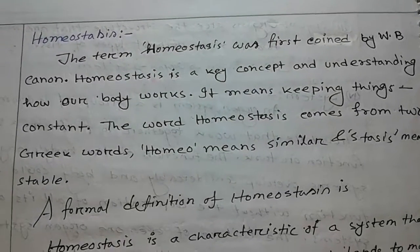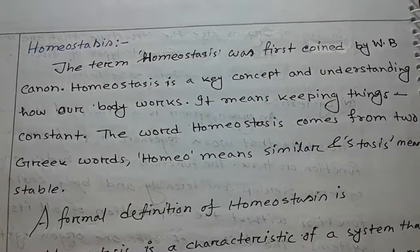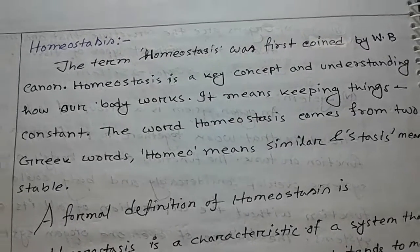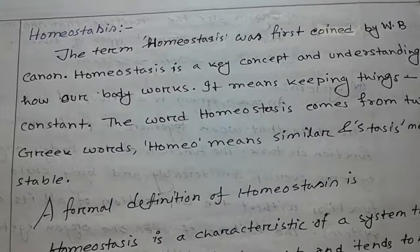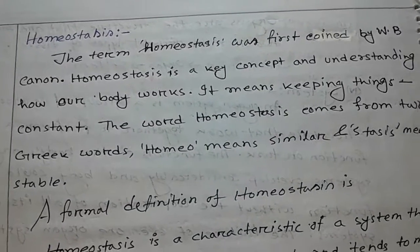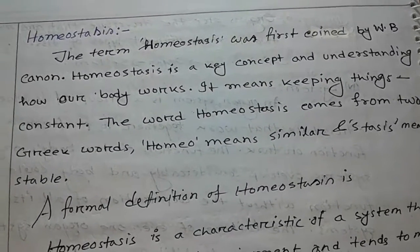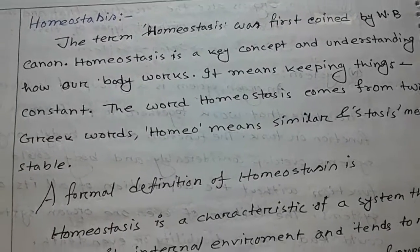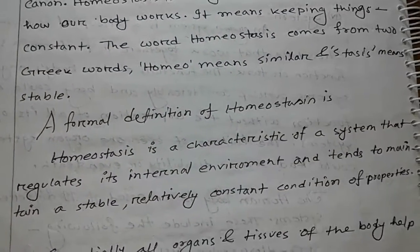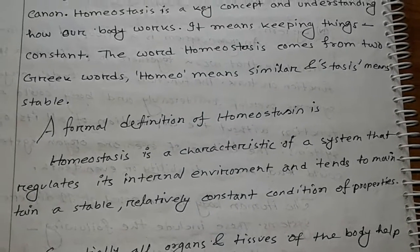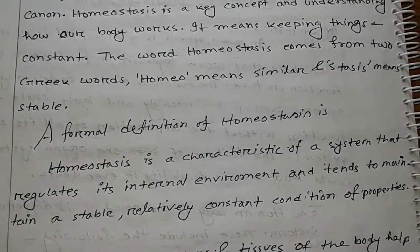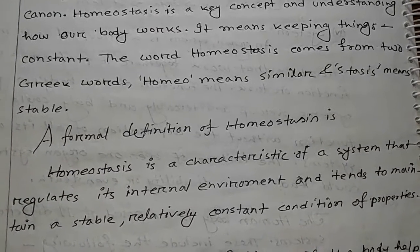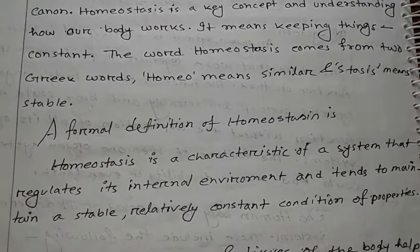Now, homeostasis. The term homeostasis was first coined by W.B. Cannon. Homeostasis is a key concept in understanding how our body works — it means keeping things constant. The word homeostasis comes from two Greek words: homeo, meaning similar, and stasis, meaning stable. A formal definition: homeostasis is a characteristic of a system that regulates its internal environment and tends to maintain a stable, relatively constant condition of properties.